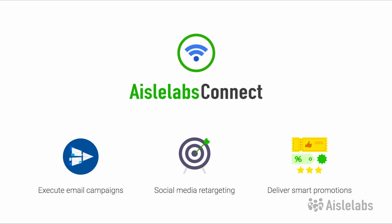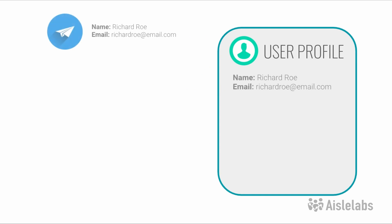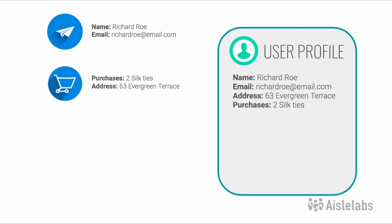Here's an overview example of how a CDP works. An online customer signs up for an email newsletter — this touchpoint provides a name and email address. Next, they make a purchase through an online store, which now provides transactional information as well as their address required for delivery. This information is then combined into a single customer profile.